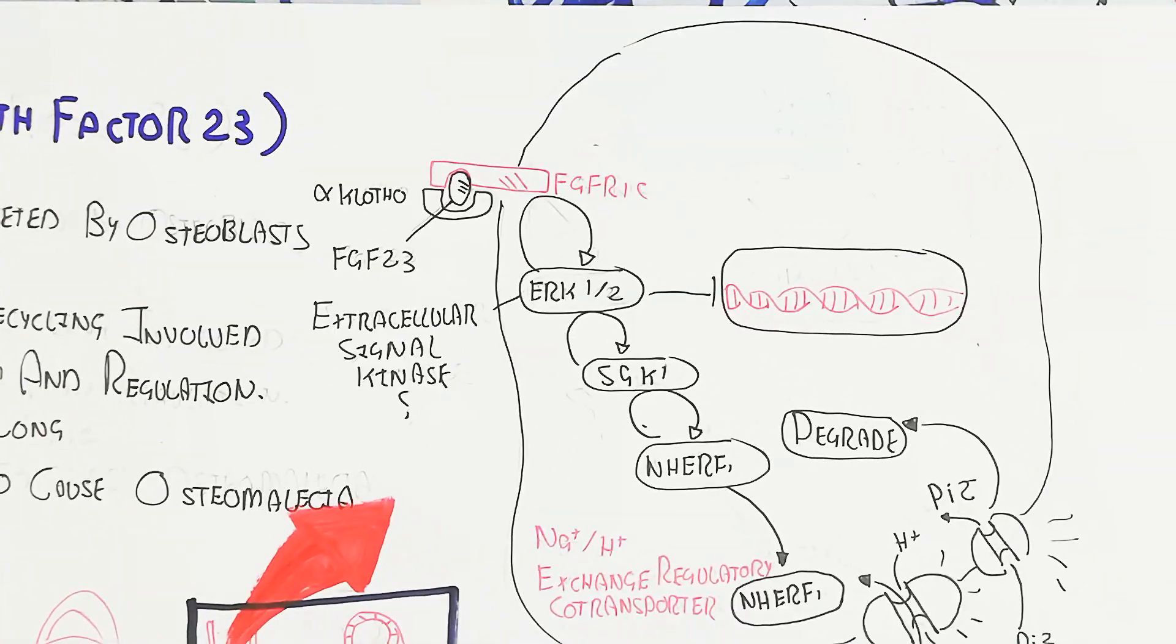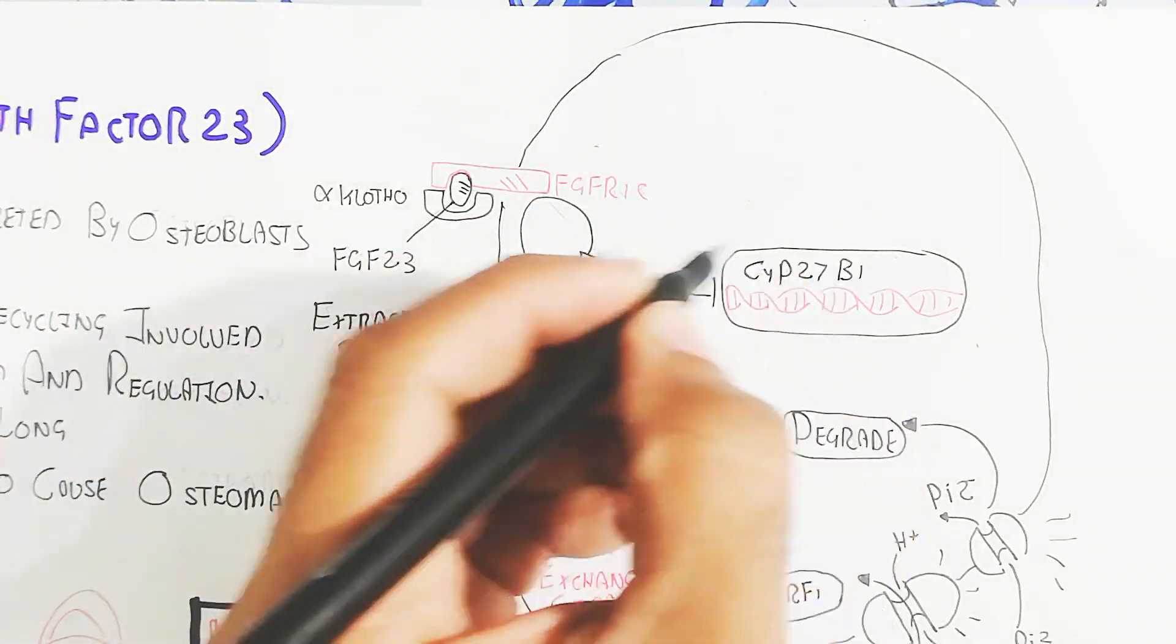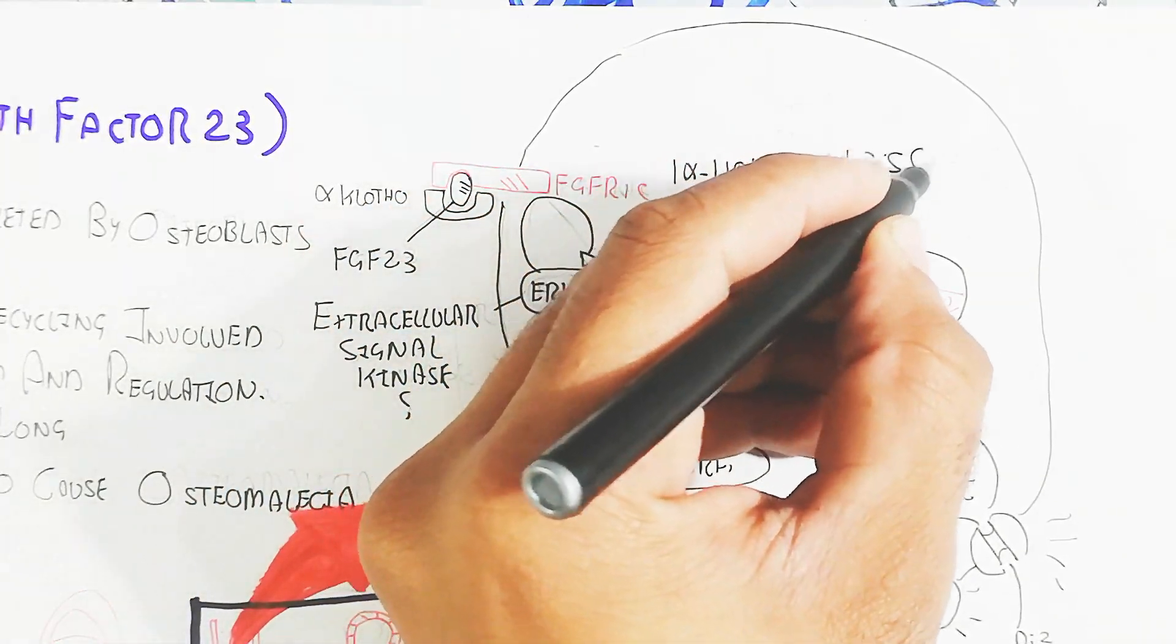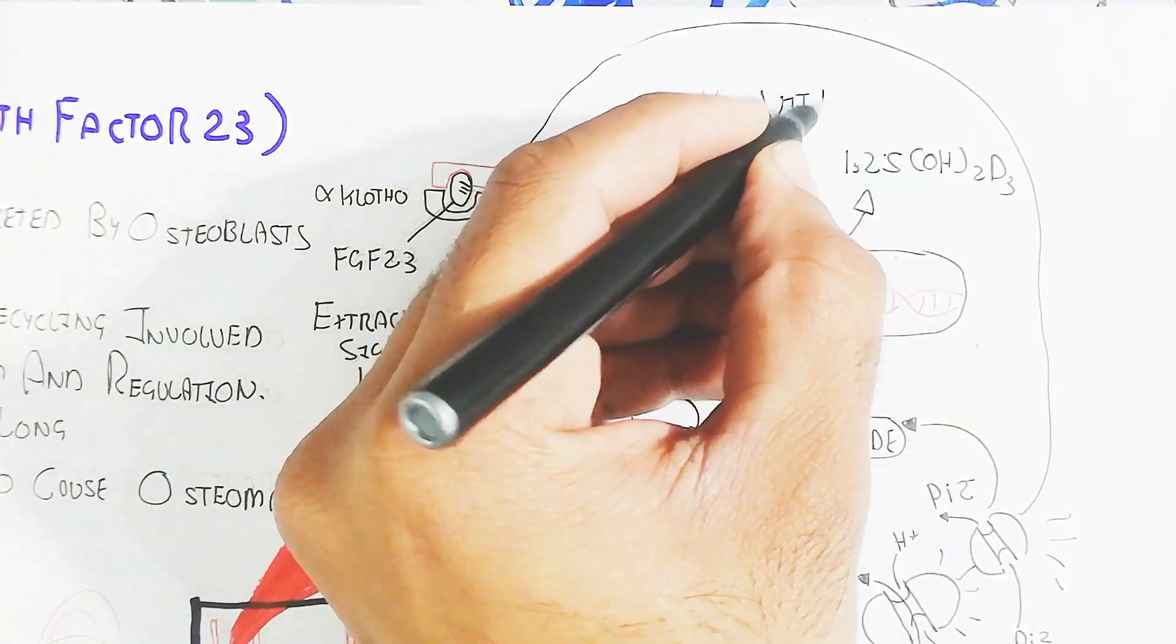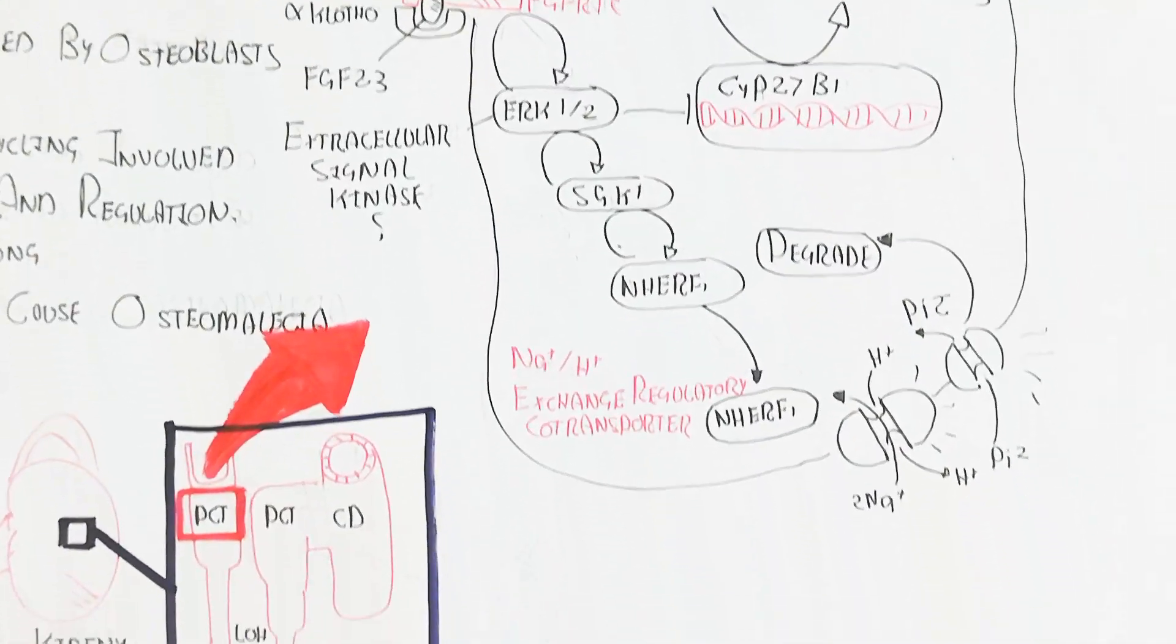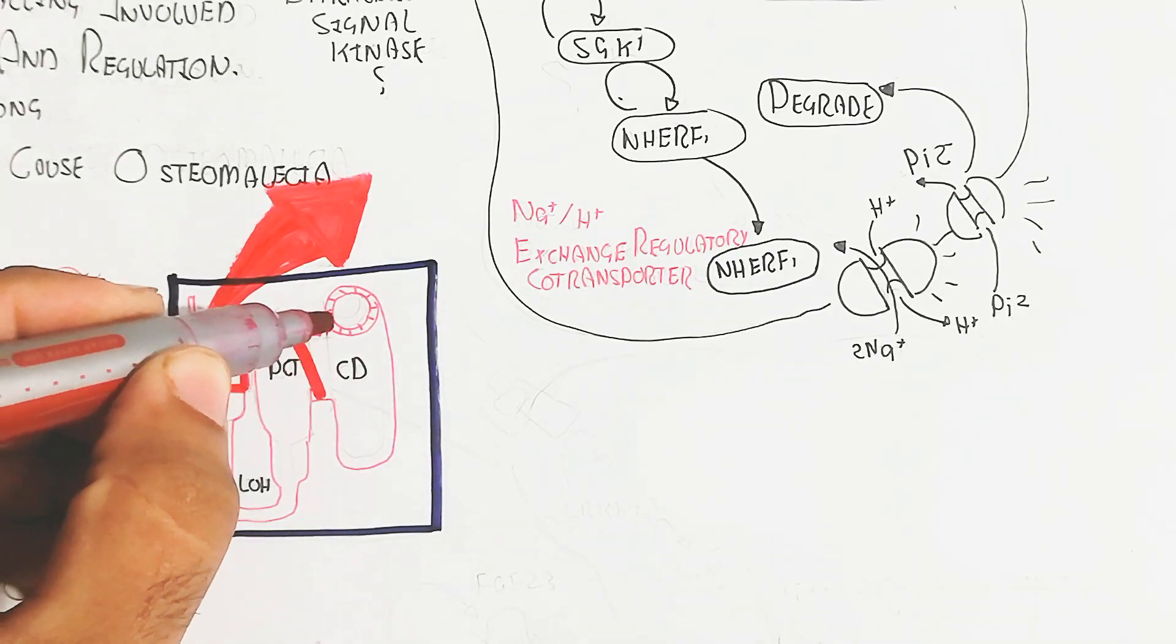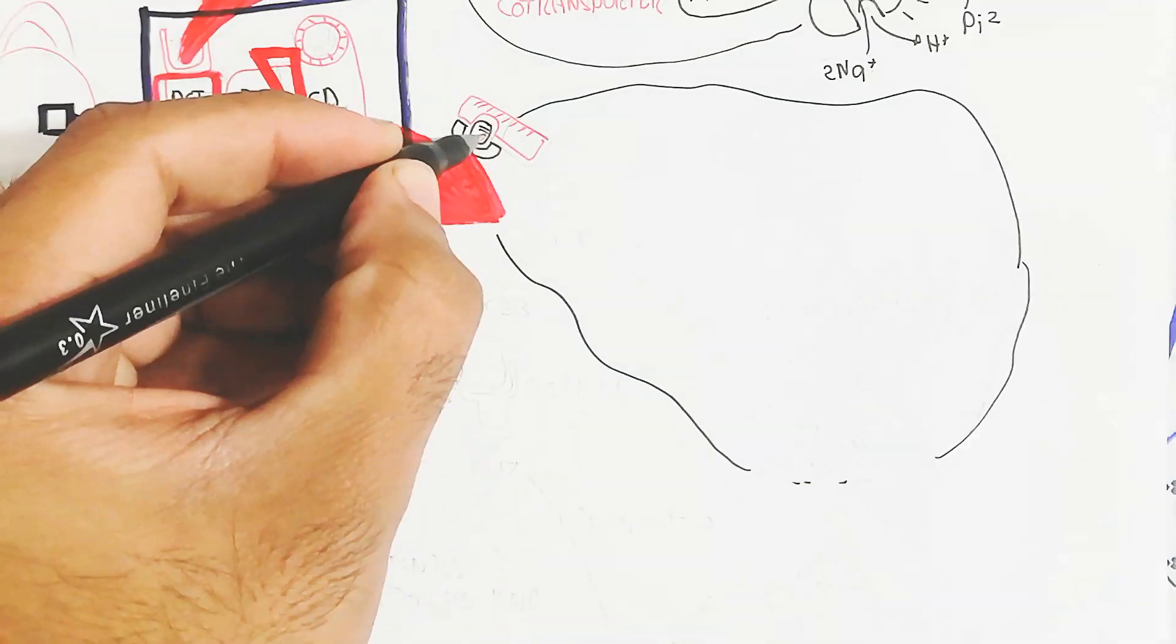While also the ERK1 and 2 will inhibit the CYP27B1 gene. And in this way, basically the vitamin inactivation due to the 1-alpha-hydroxylase enzyme used to convert the 1-25-dihydroxyvitamin D3, so it is impossible.